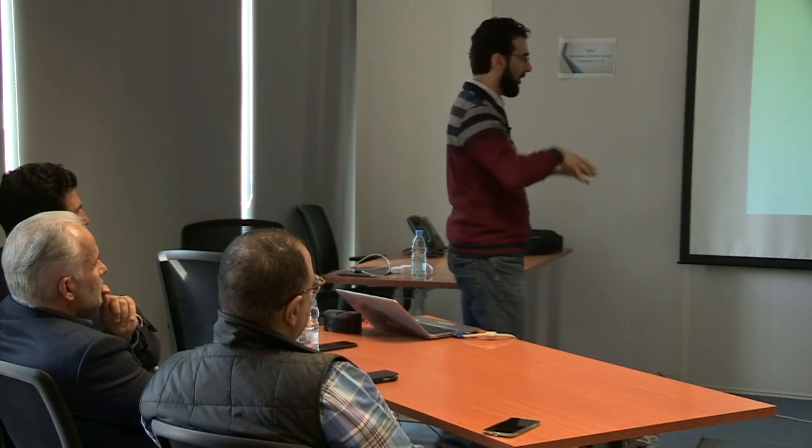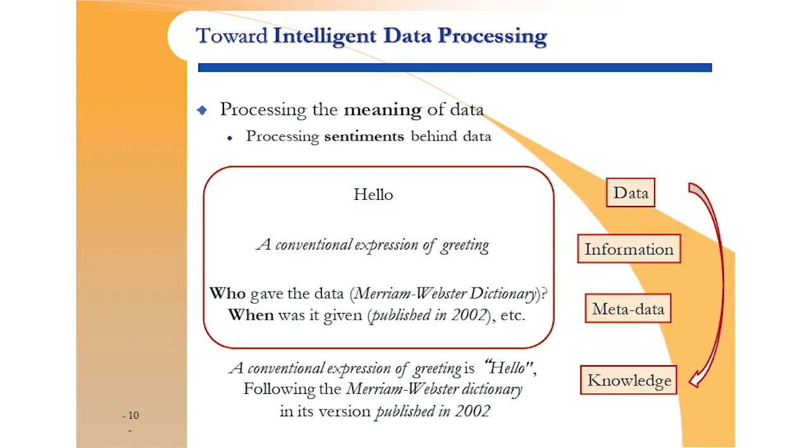For example, 'hello' is a greeting in the English language. Metadata is data describing the information — who said this word, where was it said, in what context. Knowledge is the concatenation of everything — all the information and all the data together regarding a certain piece of data. This is what we want the computer to understand whenever something is uttered.